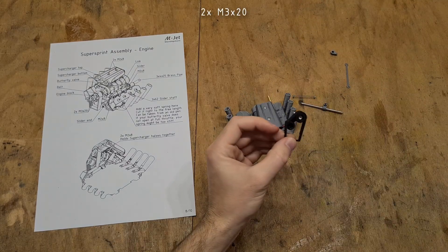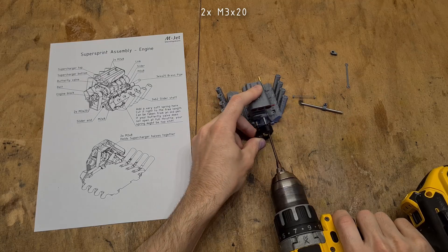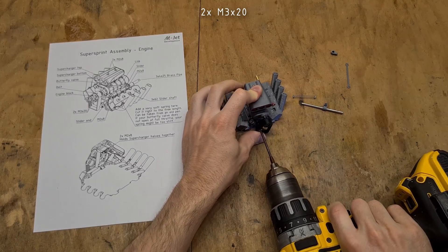The next step is to mount the printed belt onto the engine using two M3x20.